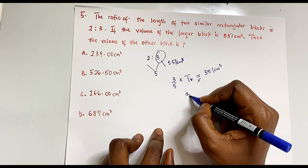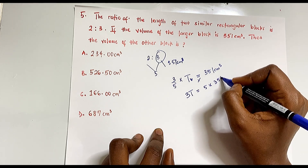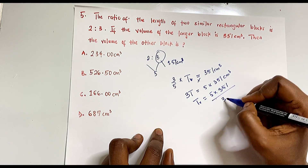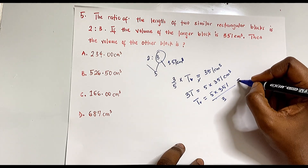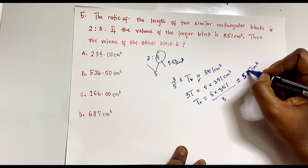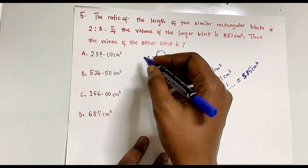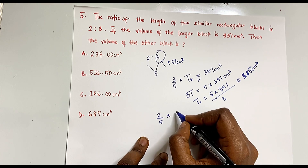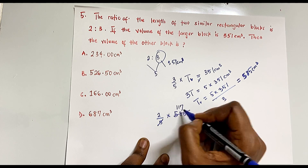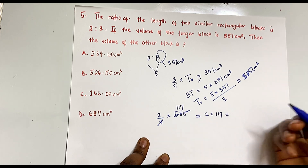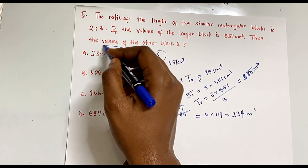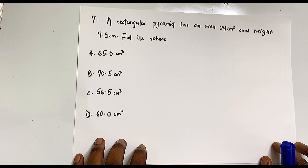Cross-multiplying: 3 × Total Volume = 5 × 351, so Total Volume = 1755 ÷ 3 = 585 cm³. The smaller block's volume is then 2/5 × 585 = 2 × 117 = 234 centimeters cubed, which is option A.